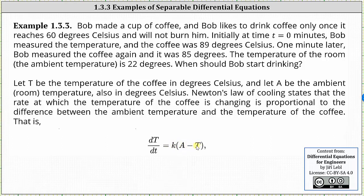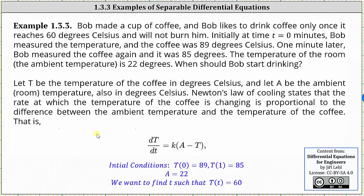Before we go on, let's record all the given information, or the initial conditions. At time zero, the temperature is 89 degrees Celsius, which means big T of zero equals 89. After one minute, the temperature is 85 degrees, which indicates big T of one equals 85. And since the ambient or room temperature is 22 degrees, we know A is equal to 22. To answer the question, we want to find the time little t such that big T of little t is equal to 60 degrees Celsius.